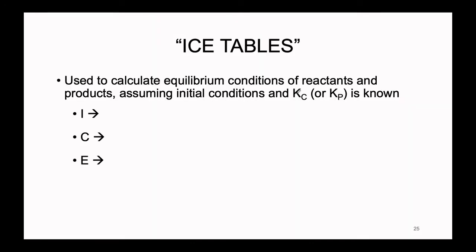Now that we have a way to predict which direction a reversible reaction is going to shift depending on how close or far away you are from equilibrium, let's tie in the idea of being able to calculate equilibrium concentrations if you know initial concentrations. This type of process we're going to talk about using ICE tables — and yes, ICE in this case is an acronym.